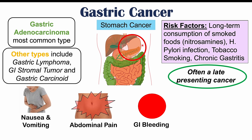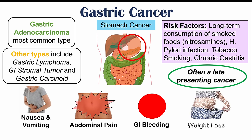We can also see what we call melena, which is a black, tarry, smelly stool. If the patient doesn't vomit up the blood, they may still end up digesting that blood from the cancer, and their stool will become black from the digested hemoglobin and can be very smelly. Weight loss is also another symptom — this can be due to the cancer diverting nutrients toward its own growth, but also from the fact that patients can have early satiety, feeling fuller quicker if there's a cancerous mass in the stomach.